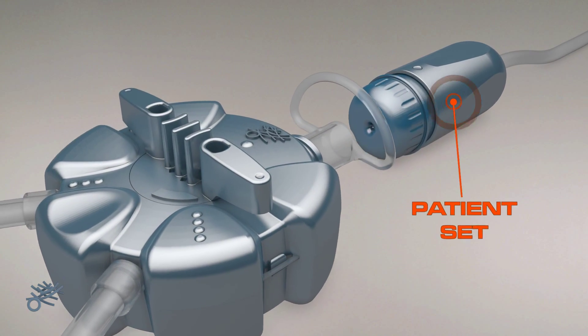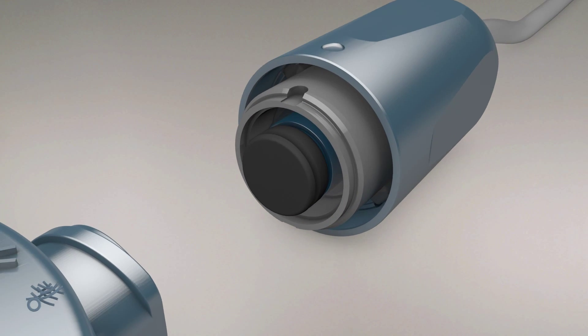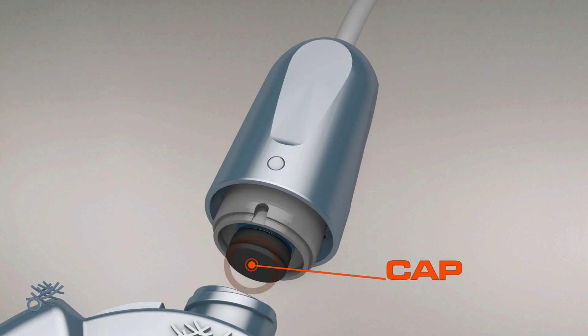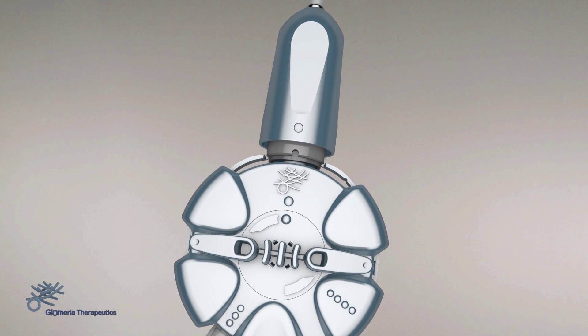Before connecting the patient set to the disposable unit, a cover is removed. The patient set end is still sealed by the cap, along with a safety valve, which is an additional barrier to potential contaminants.